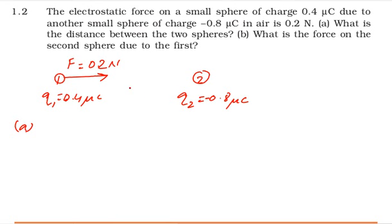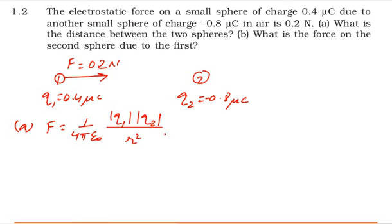For forces between two charges we use Coulomb's law: F = 1/(4π ε₀) × |q1||q2| / r². In this expression I know the force, I know this constant, and I know the two charges, but I don't know the distance r, which I have to calculate. I will always use physical quantities with units.